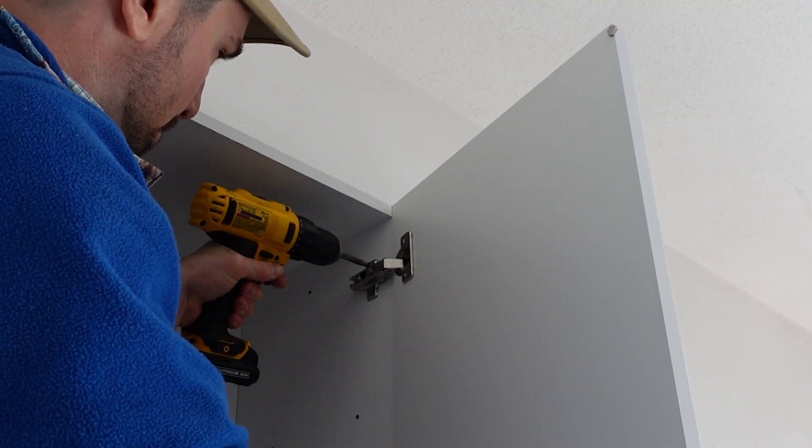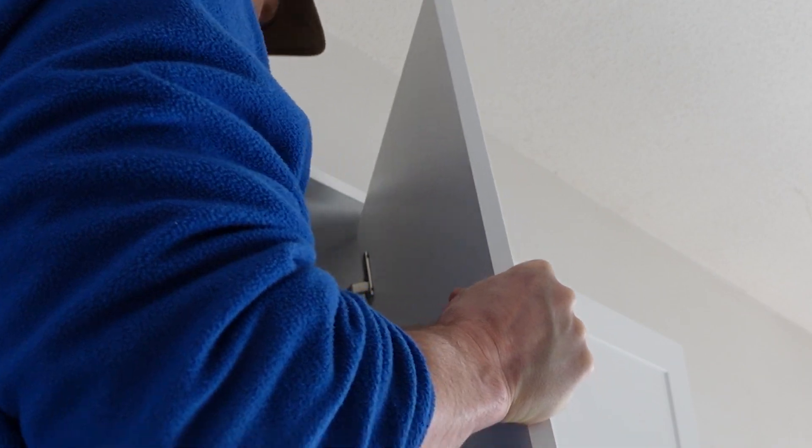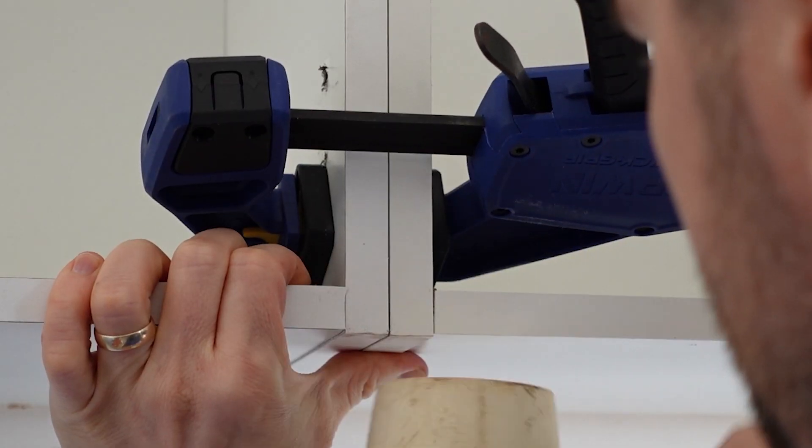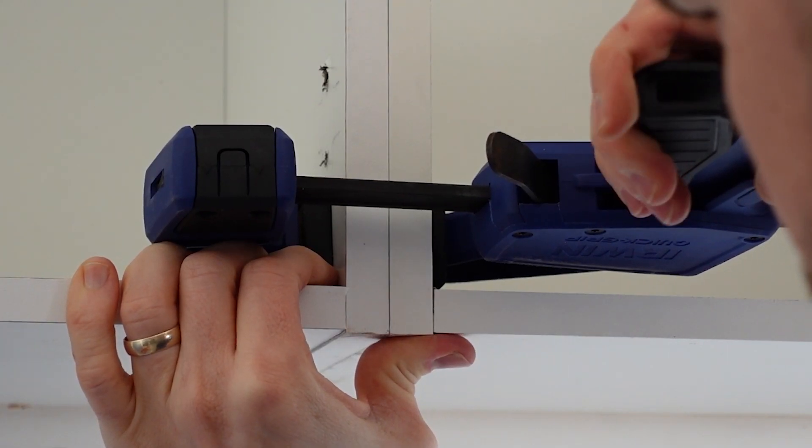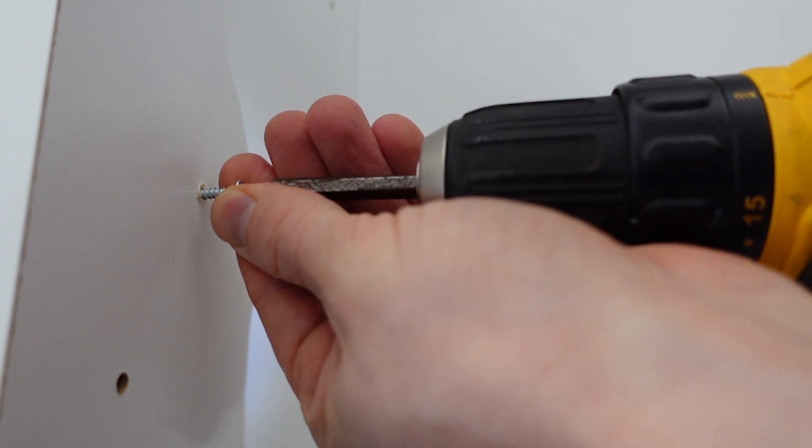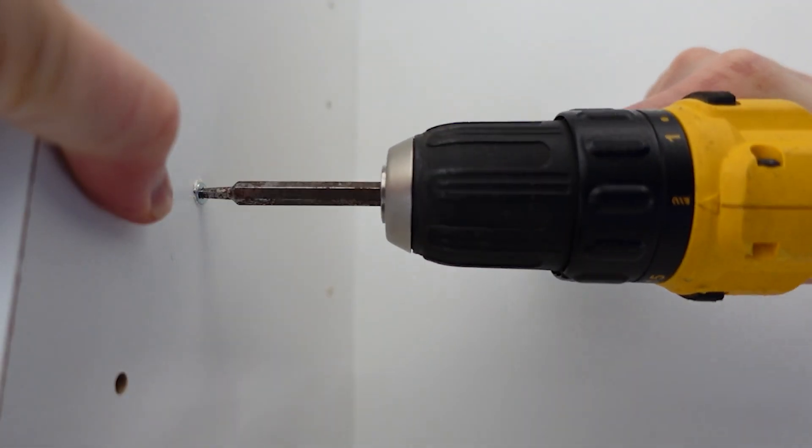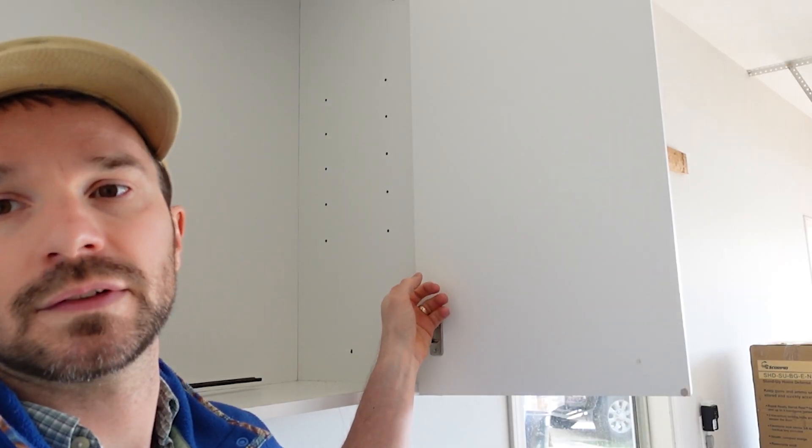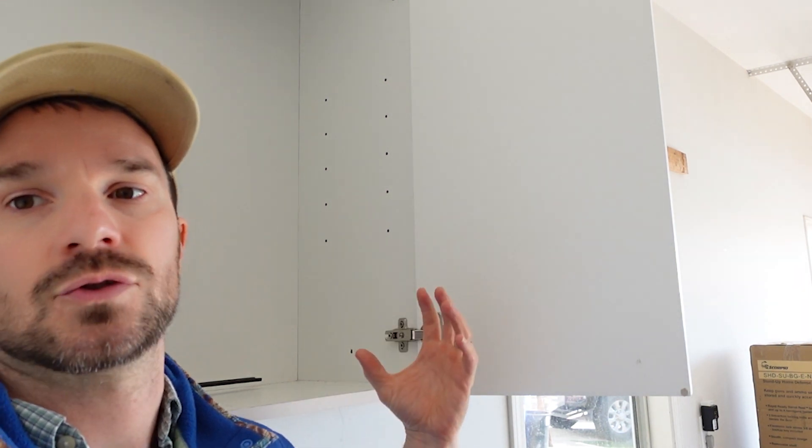We're going to take off opposing doors so we can clamp on the boxes themselves and get them to line up perfectly. Then we'll put some three quarter inch screws to join the two boxes together and give them that extra rigidity.